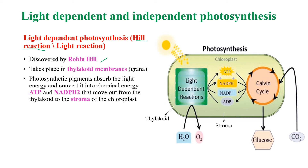The light dependent photosynthesis takes place in the thylakoid membranes of the chloroplast. During this process, the photosynthetic pigments absorb light energy and convert it into chemical energy in the form of ATP and NADPH. These ATP and NADPH then move out of the thylakoid to the stroma.